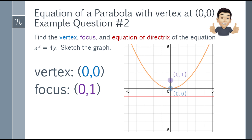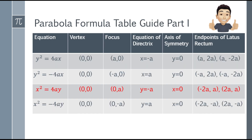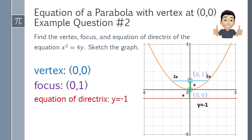Next, we need to find the equation of the directrix. From the formula table, when x² = 4y, the equation of the directrix is y = −A. Since A = 1, the equation of the directrix is y = −1.